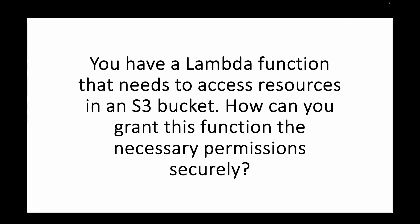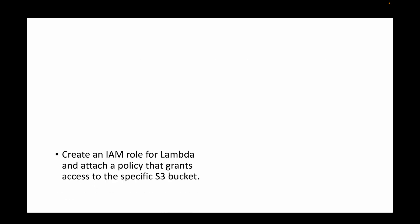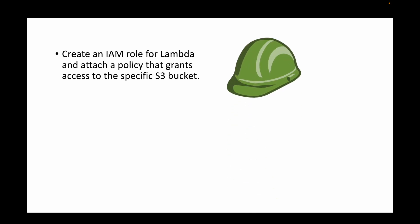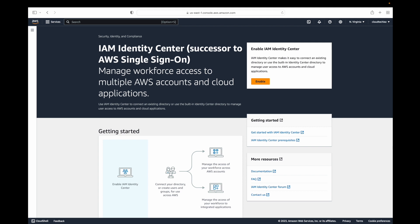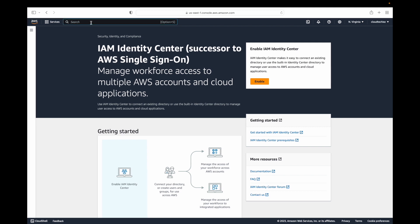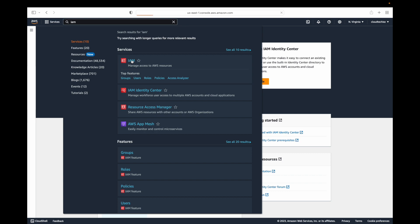The next question is: you have a Lambda function that needs access to resources in an S3 bucket. How can you grant this function the necessary permissions securely? By default, services in AWS cannot talk to each other — one service cannot access another service by default. For this, we create an IAM role that has the necessary permissions, in this case granting access to the S3 bucket.